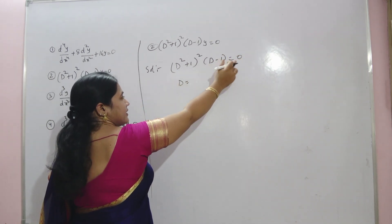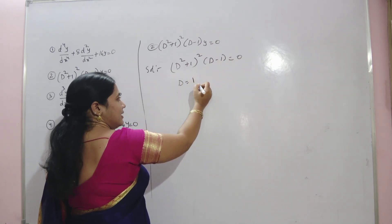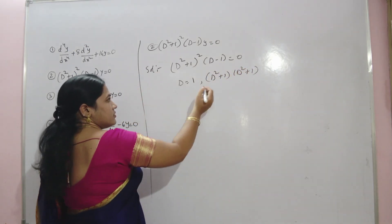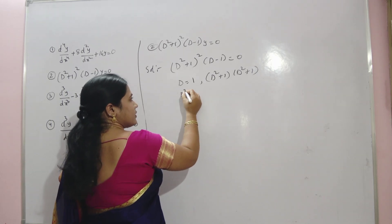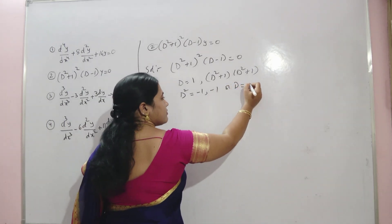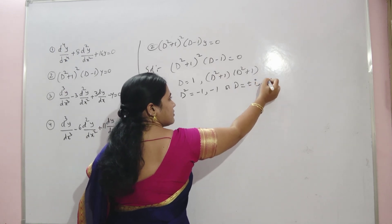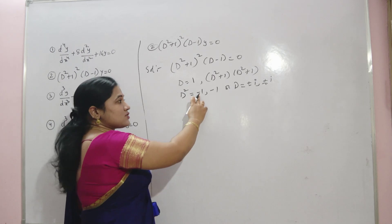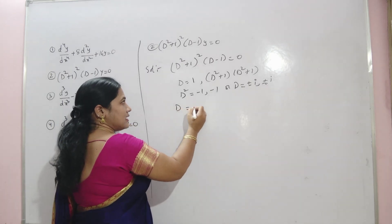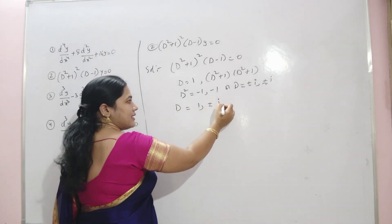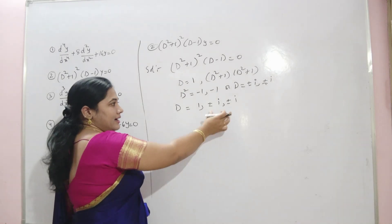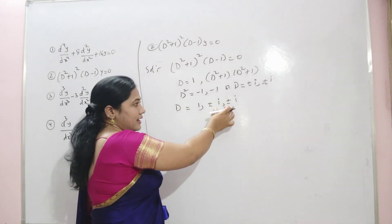From D − 1 = 0, one root is D = 1. From (D² + 1)(D² + 1) = 0, D² = −1 and −1, so D = ±i and ±i (since i² = −1). Therefore the roots are 1, ±i, and ±i — one real root and two pairs of equal imaginary roots.